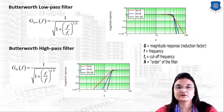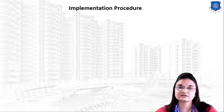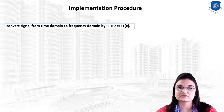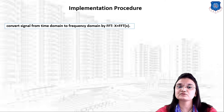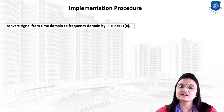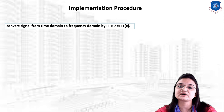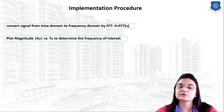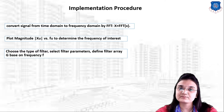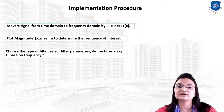Now let us understand how to implement a filter. The procedure is: Step 1 — convert the signal from the time domain to the frequency domain using the Fast Fourier Transform. Step 2 — plot the magnitude |X(u)| versus f(u) to determine the frequency of interest. Step 3 — choose the type of filter and select its parameters, defining the filter as G based on frequency f.